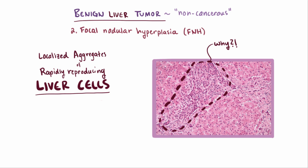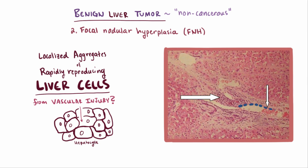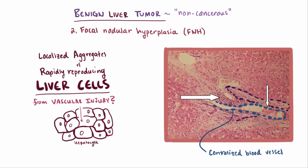We don't really know why these form, but it's thought that they could be a response to vascular injury of some kind that leads hepatocytes to ramp up reproduction and form these aggregates of cells. Another reason it's thought to be a result of vascular injury is that there's almost always an abnormally large blood vessel in the center, with smaller branches radiating out into the periphery. Further supporting this vascular injury hypothesis is that there's almost always a characteristic gross finding of a centralized fibrous scar tissue produced by stellate cells.